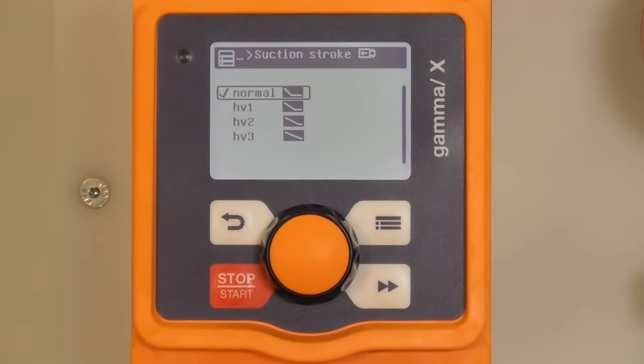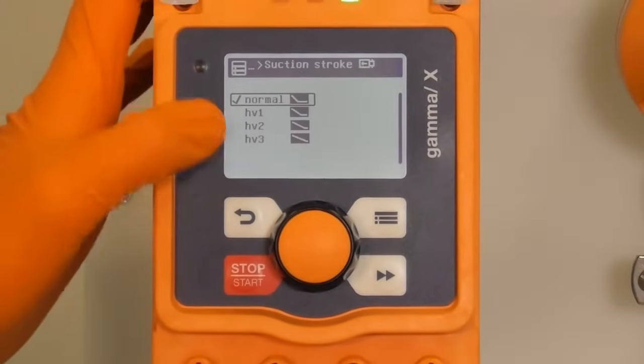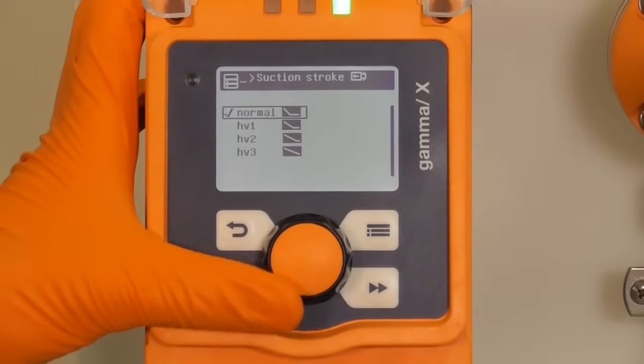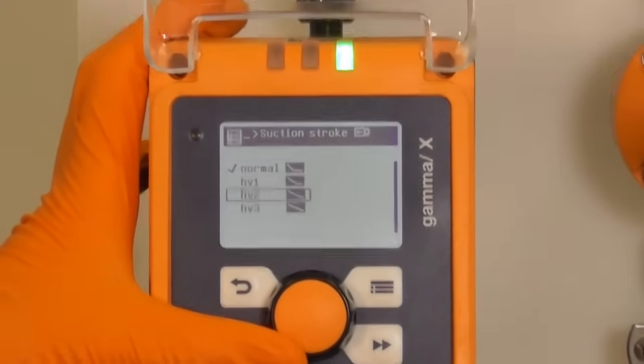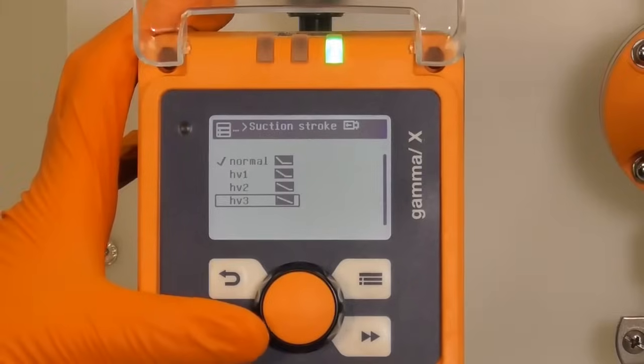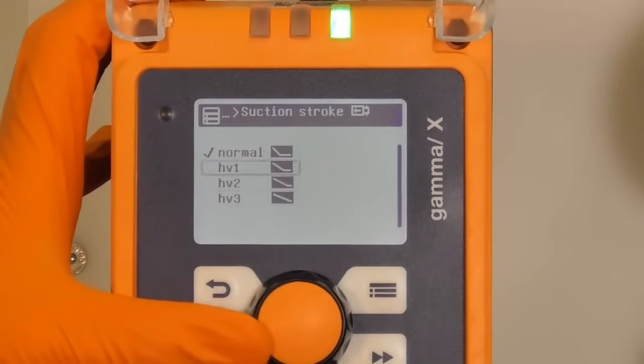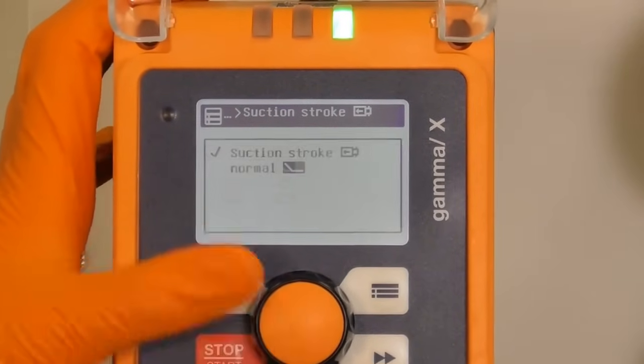We have four different suction strokes in total: normal, high viscosity 1, high viscosity 2, and high viscosity 3. Normal is the pre-set suction stroke.